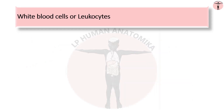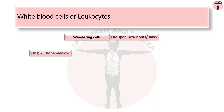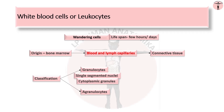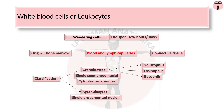Coming to the next type of cells: leukocytes or white blood cells, which are wandering cells. Their lifespan is a few hours or days. These cells originate from bone marrow and migrate via blood and lymph capillaries to the connective tissue. They are classified into two groups: granulocytes and agranulocytes. Granulocytes are characterized by single segmented nuclei and cytoplasmic granules with specific contents; neutrophils, eosinophils and basophils are the three types. Agranulocytes are characterized by a single unsegmented nucleus and lack specific cytoplasmic granules.